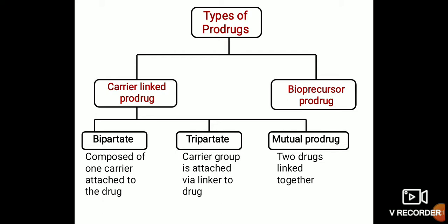Bipartite prodrugs are composed of one carrier attached to the drug. Tripartite means three carrier groups attached via a linker to the drug. Mutual prodrugs, as the name indicates, involve two drugs linked together.